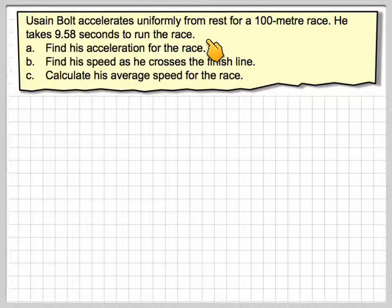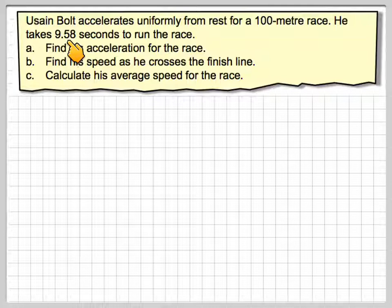Usain Bolt accelerates uniformly from rest for a 100 meter race. He takes 9.58 seconds to run the race. That's actually the world record that he holds for the 100 meters. Find his acceleration for the race, assuming it's constant. Find his speed as he crosses the finish line and calculate his average speed for the race.